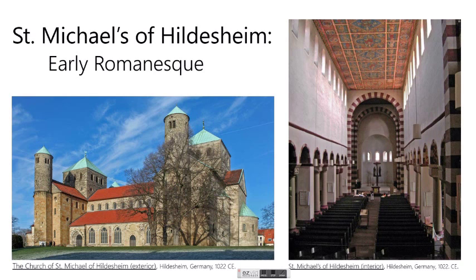One of the things that held true through this whole time period was the idea that a church was following the basic basilica structure: a central hall supported by columns and arches, with aisles on either side, often a semi-dome area at the end for the altar, and frequently a transept across right in front of the altar.